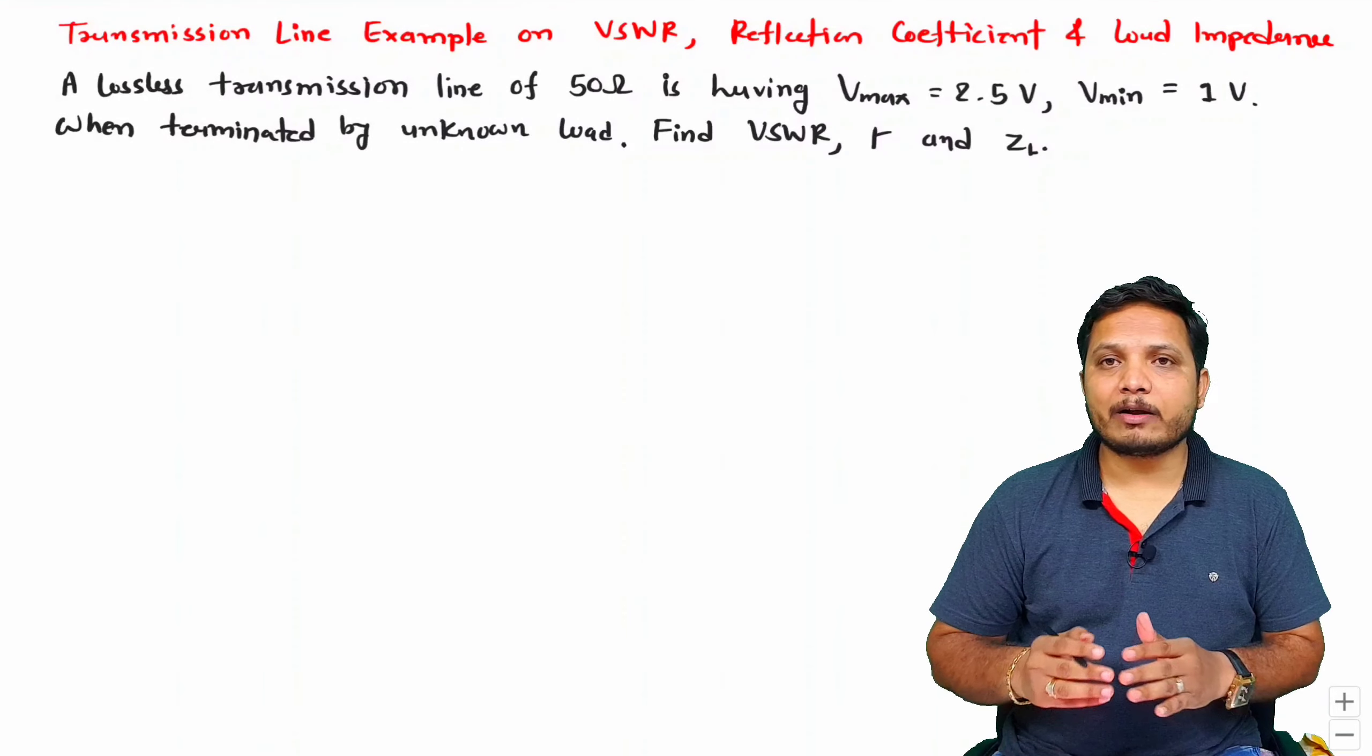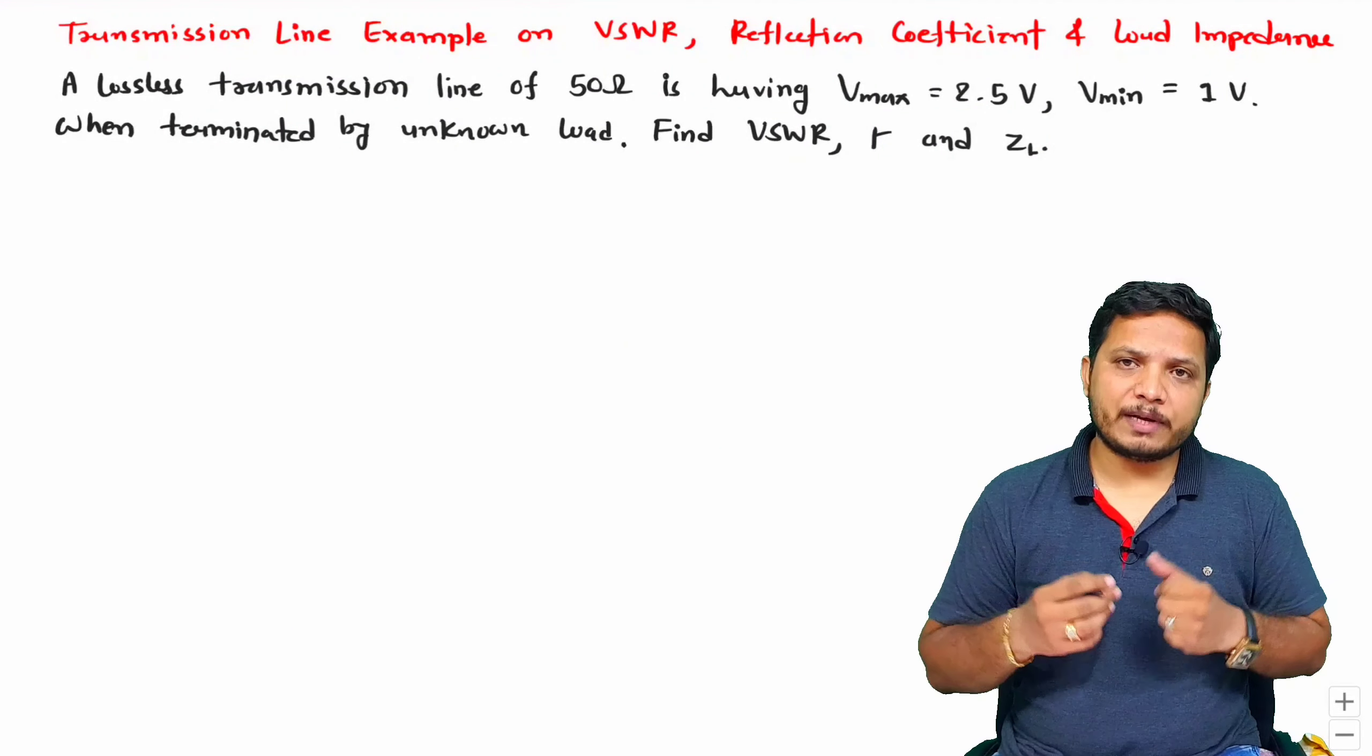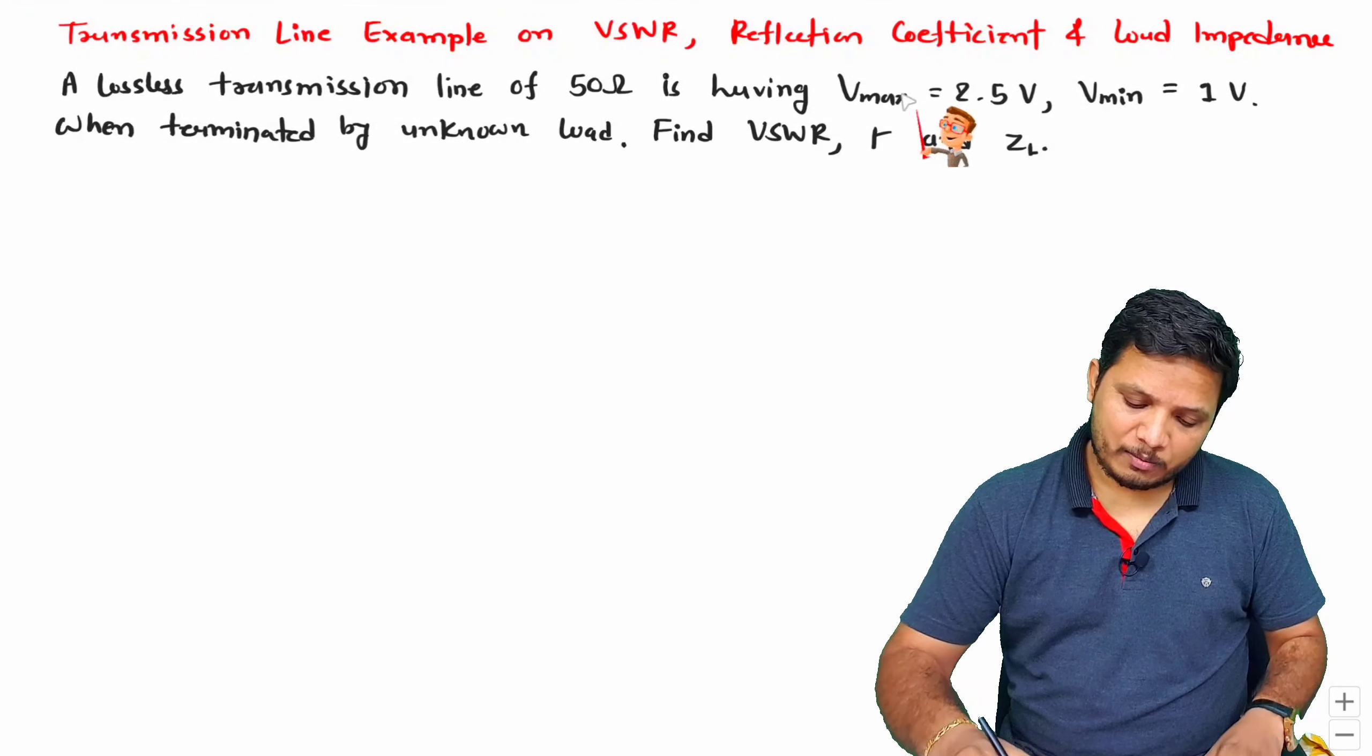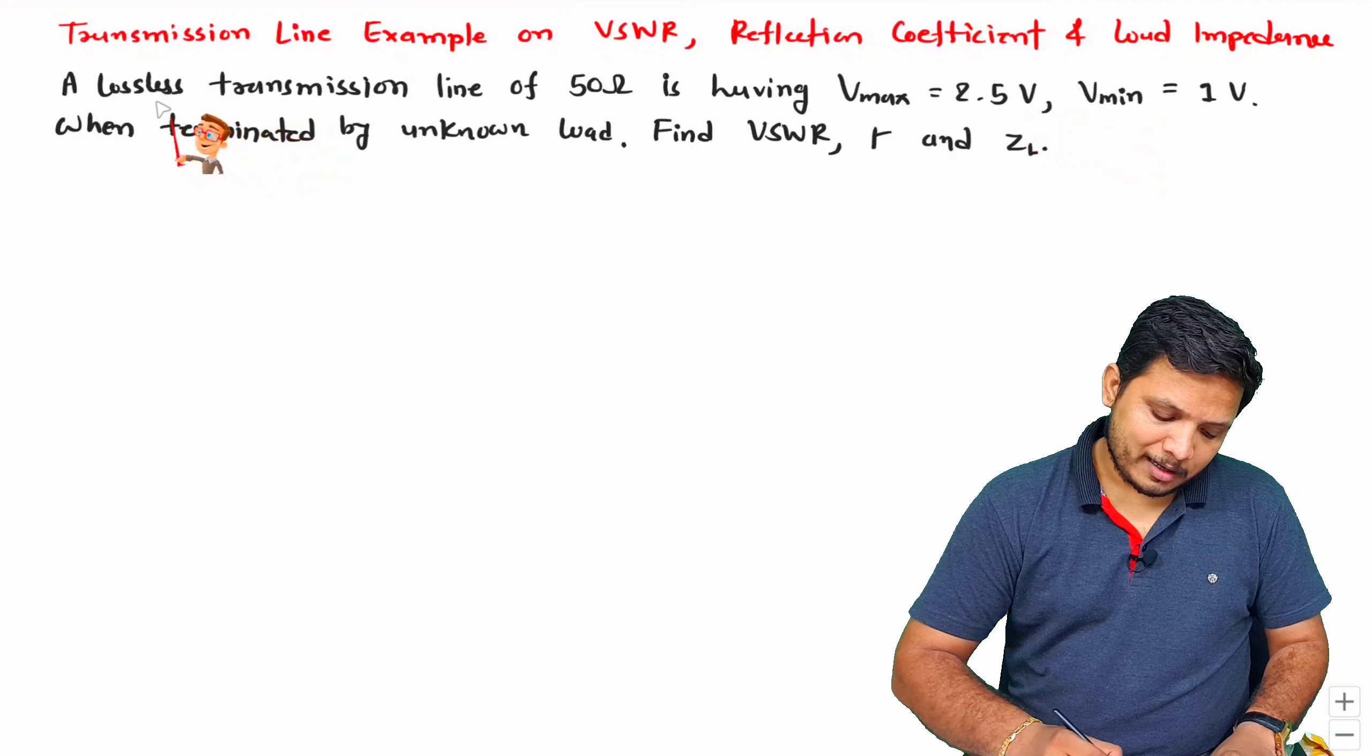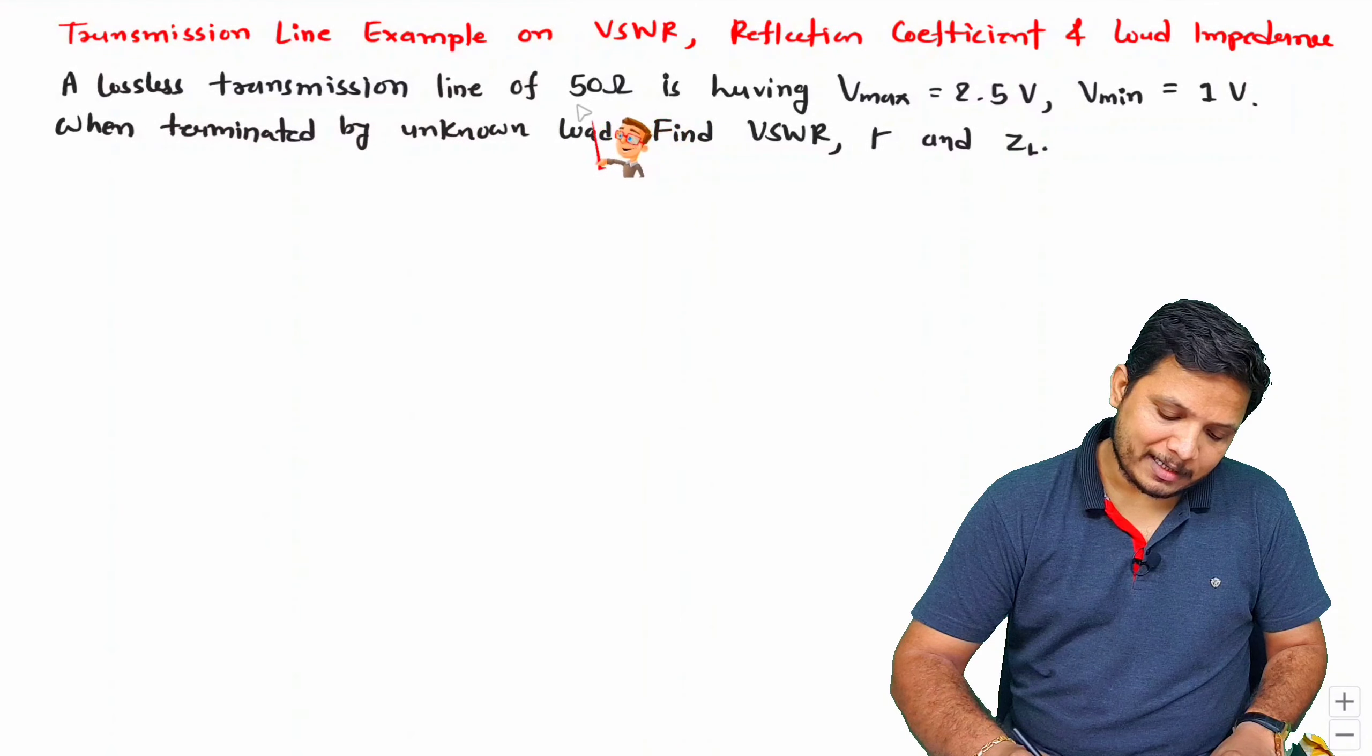We have already derived all the formulas related to transmission line in my previous videos, so I will be directly using them here. Based on Vmax and Vmin we can identify VSWR, and the characteristic impedance given is 50 ohm. Let me write the data first.